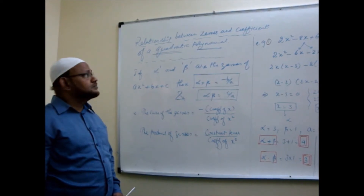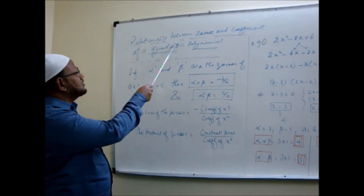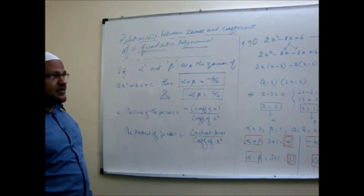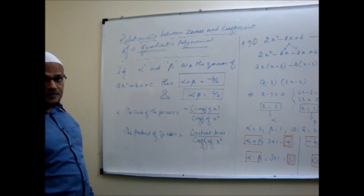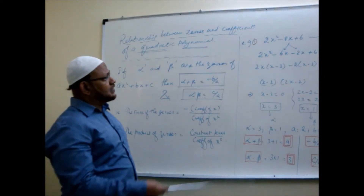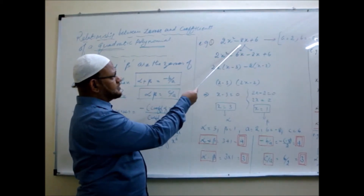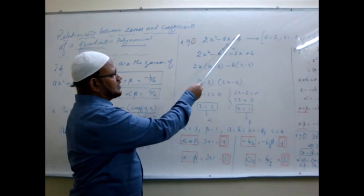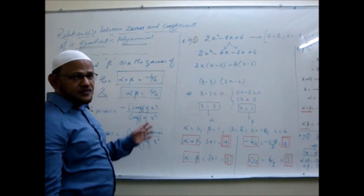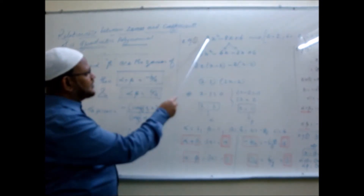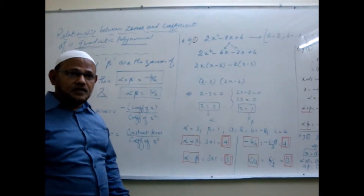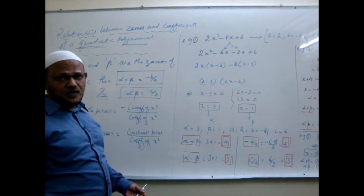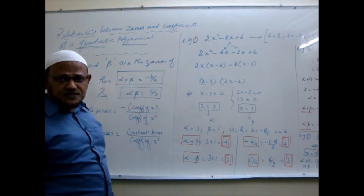The next topic is the relationship between the zeros and the coefficients of a quadratic polynomial. For example, in 2x² - 8x + 6: the 2 is the coefficient of x², minus 8 is the coefficient of x, and 6 is the constant term. For the general quadratic polynomial ax² + bx + c, we call a, b, c the coefficients — a is the coefficient of x², and c is the constant term.